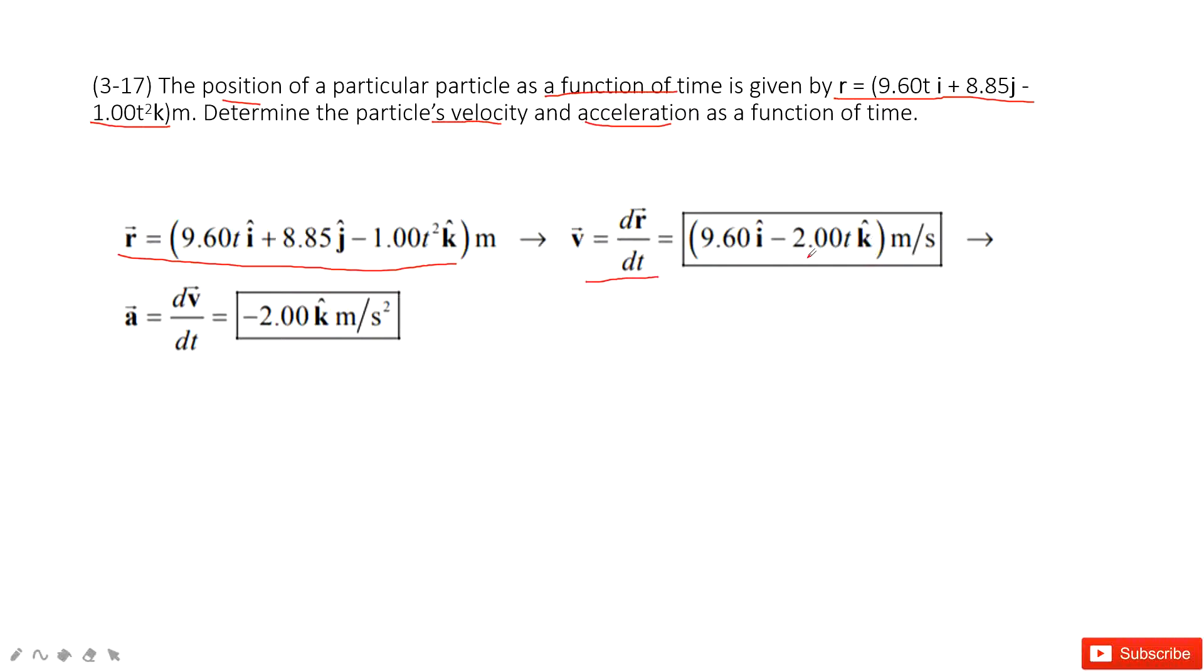Because in the k component, it changes with time t. And we can get the acceleration by taking the derivation dv/dt. In there, this term is constant, drop it. And then we get a constant negative 2.